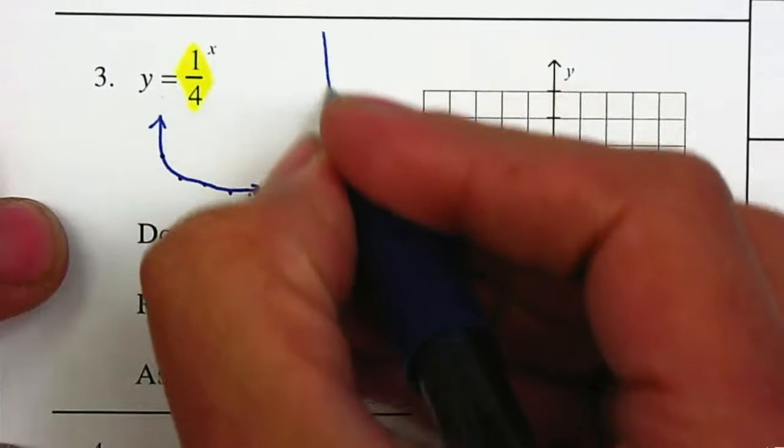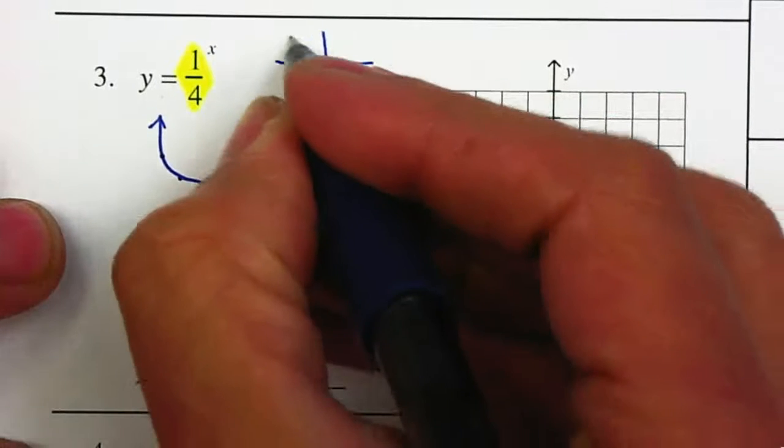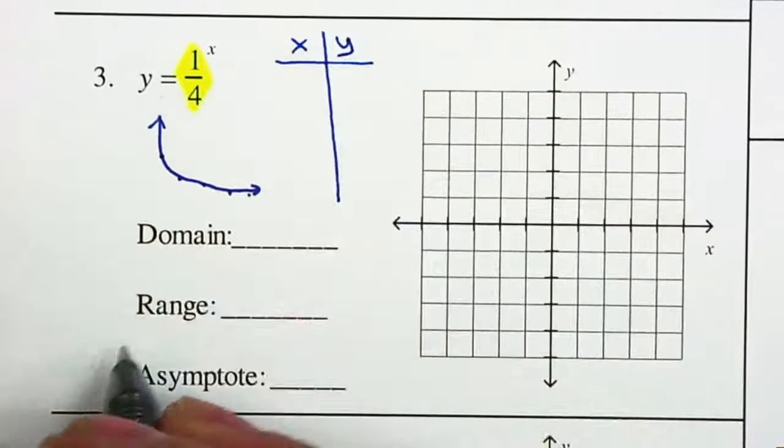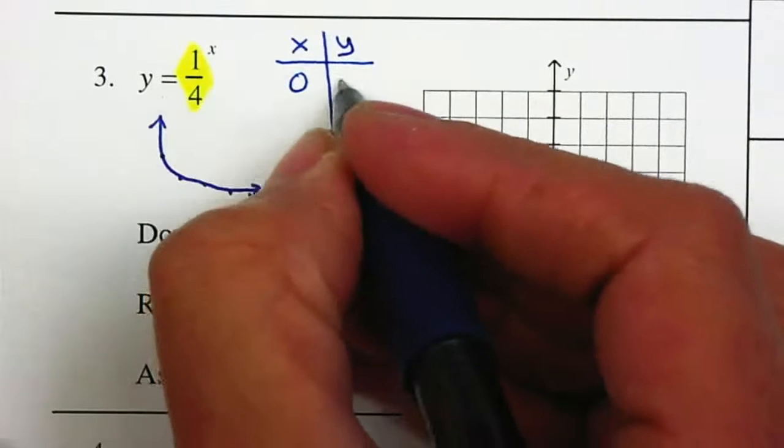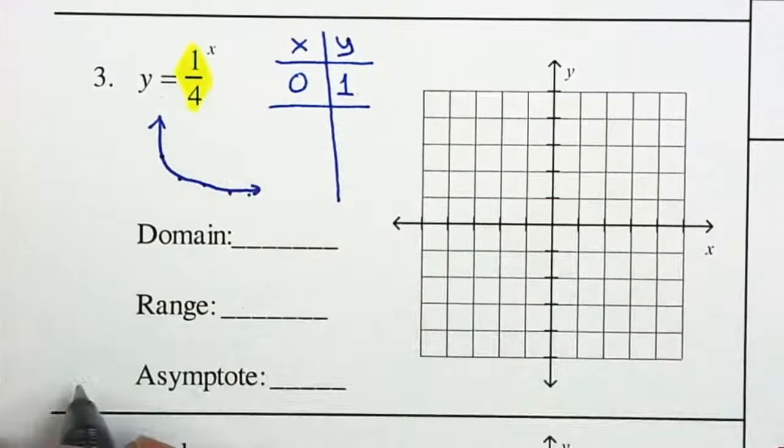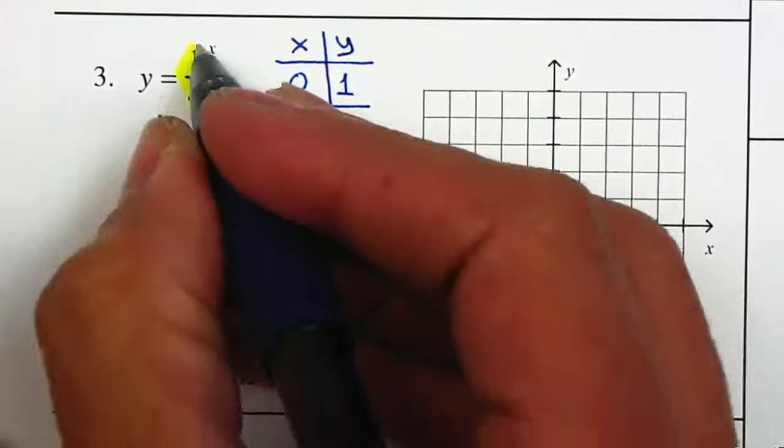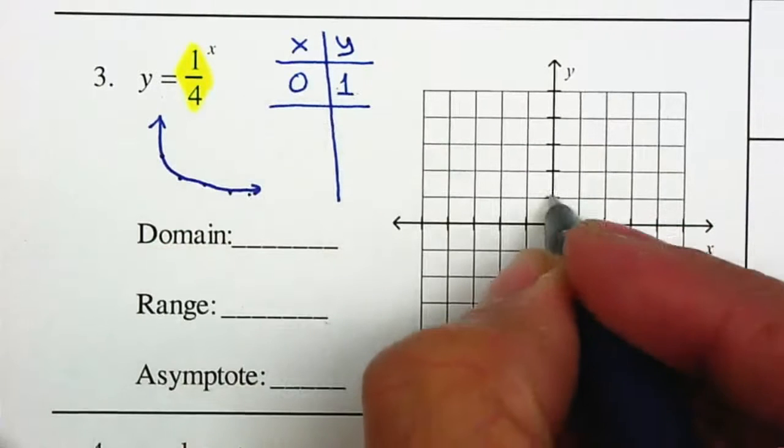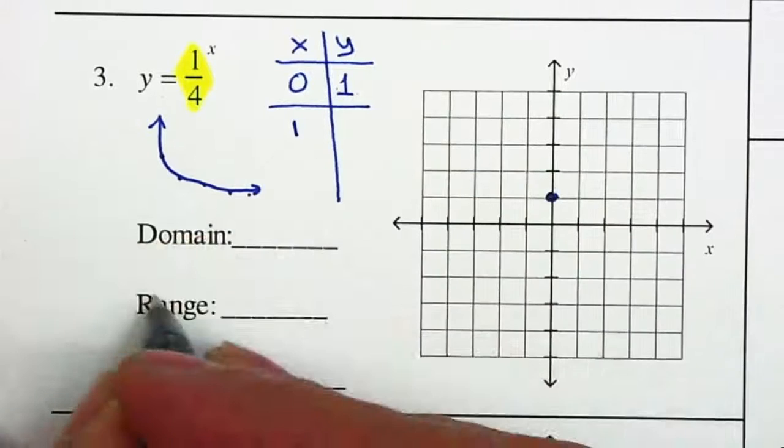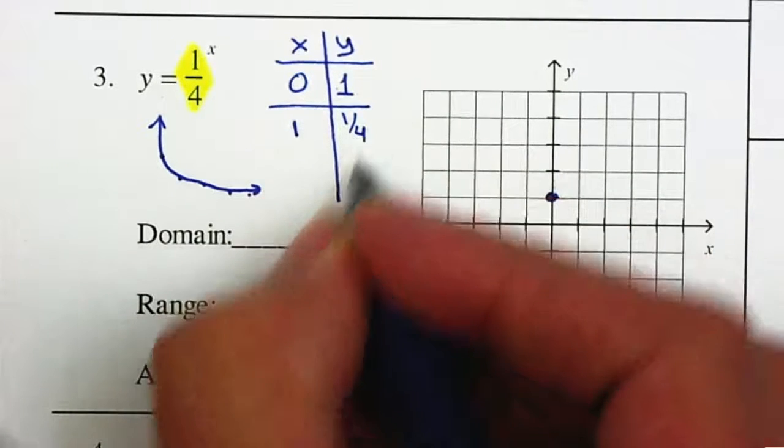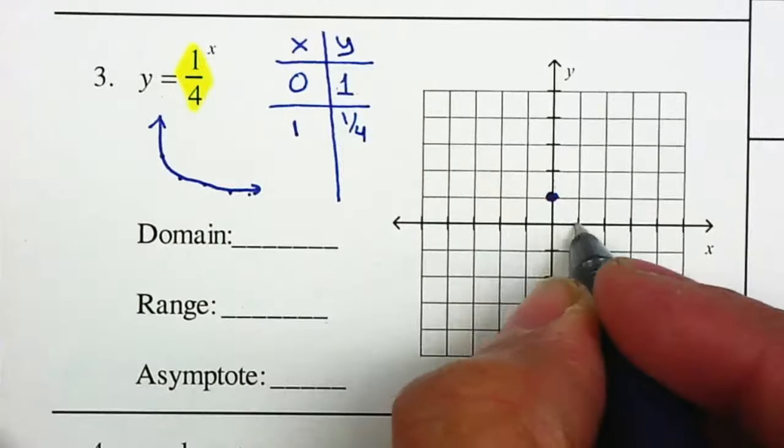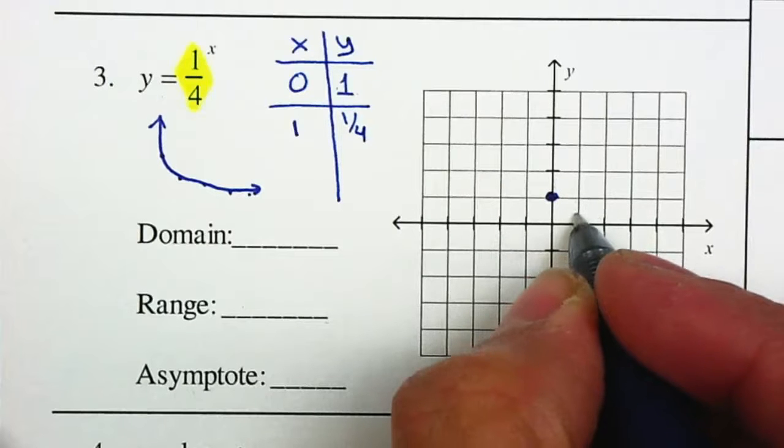But let's just make a quick table. I want to plug in values for x, gives me values back for y. I'm plugging in 0. 1 fourth to the 0th power is 1. Anything to the 0th power gives me 1. Then I'm going to plug in a 1. 1 fourth to the first power is 1 fourth. So plug in a 1, gives me 1 fourth.